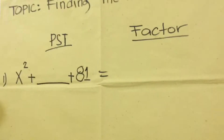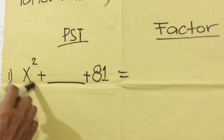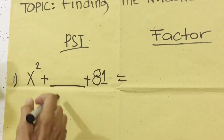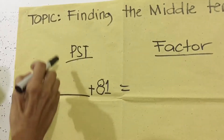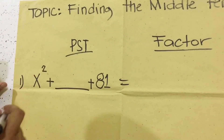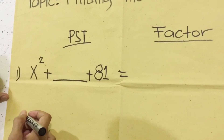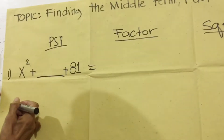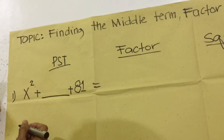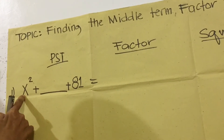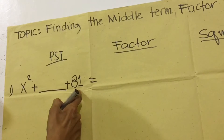Number one, we have x squared plus blank plus 81. To find the middle term of this perfect square trinomial — we use this process only when it's a perfect square trinomial — we're going to find the square root of the first term and the square root of 81.